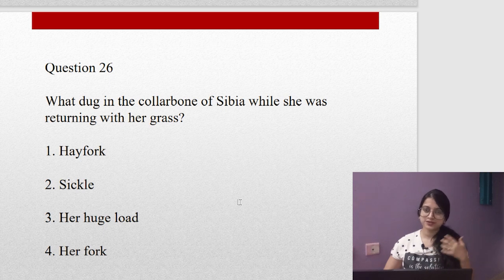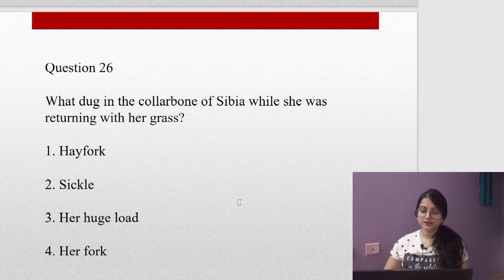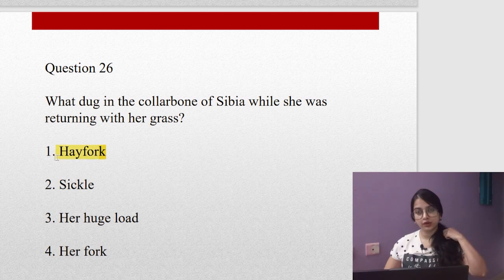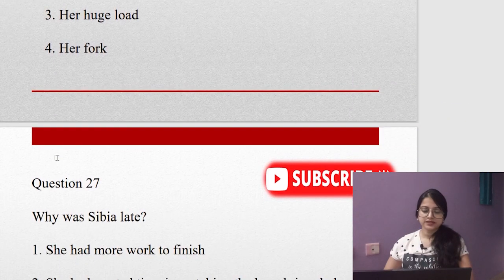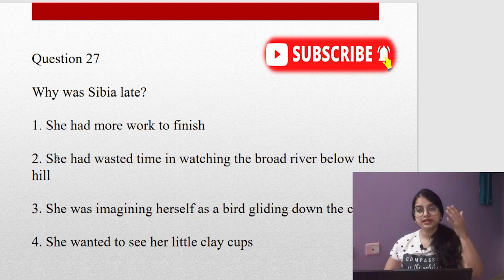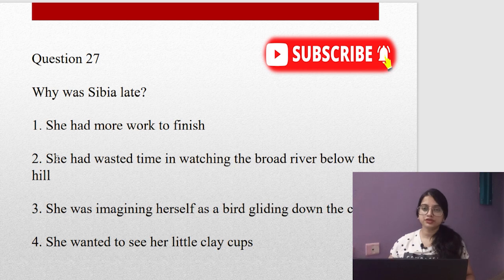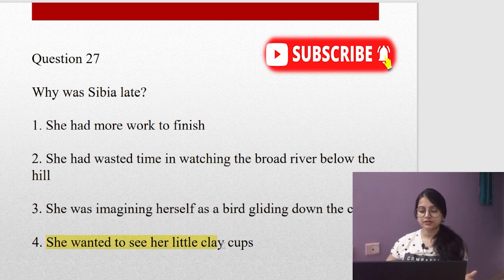Is it the hay fork, the sickle, her huge load, or her fork? It is her hay fork that was there near her collarbone, and that is why it was digging inside. Question number twenty-seven: Why was Sibia late? Remember she returned later than the other women, that is why she met the Gujar woman who was attacked by the crocodile. She had more work to finish? No, they finished their work together. She had wasted time watching the broad river? No. She was imagining herself as a bird gliding down the cliff? No. The last option is correct: She wanted to see her little clay cups. She loved to make these clay cups and paint them with colors.